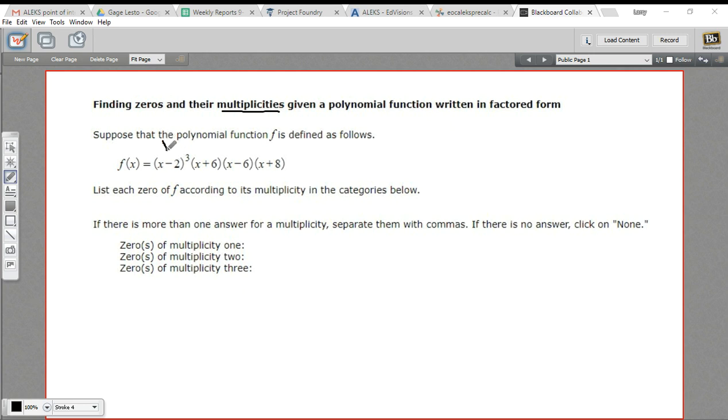So if we look at this one, for example, this is in a factored form, so this is going to be pretty convenient for us. We've got the factor x minus 2 to the third power. That's just like saying x minus 2 times x minus 2 times x minus 2.